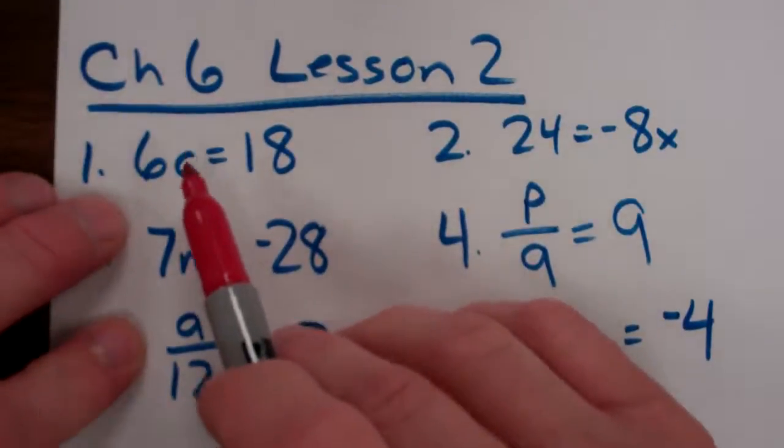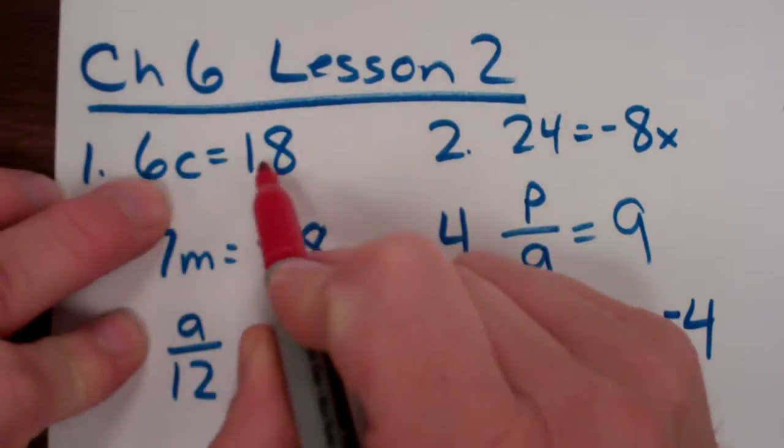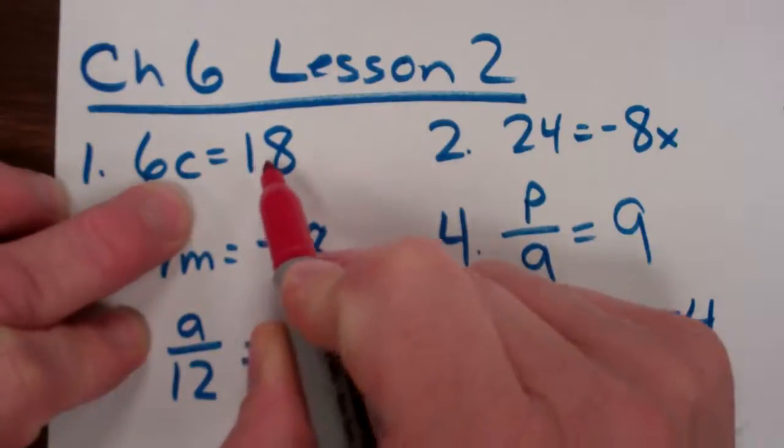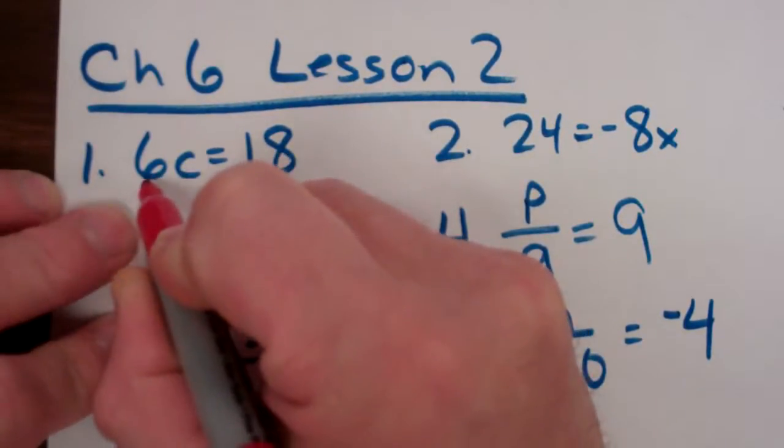Well here, I have a coefficient. That means multiply, right? So once again, I don't want to know what 6 times c is. There, somebody already did that. I'm going to undo it. What's the opposite, or the inverse operation of multiplication? Division.